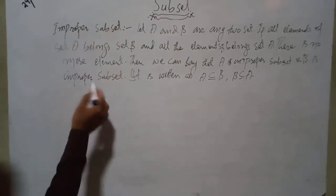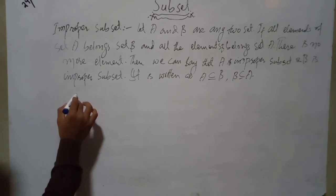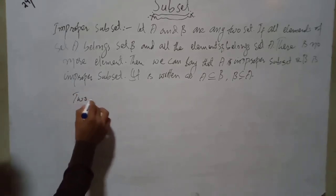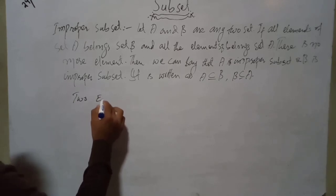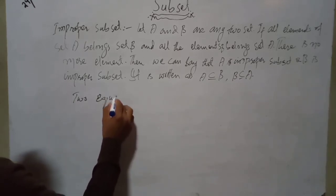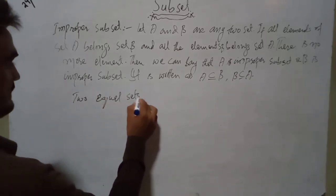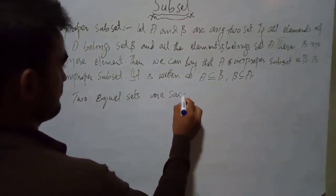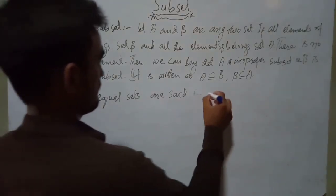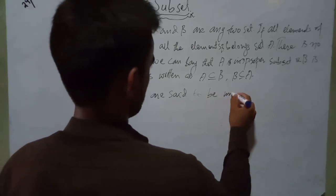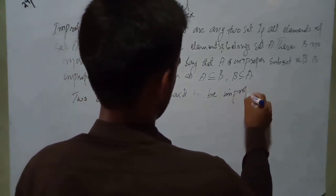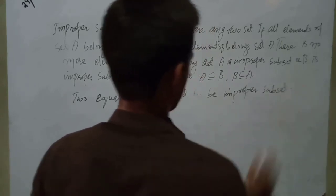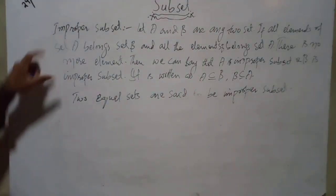It is clear from this definition that if A is a subset of B and B is also a subset of A, the two sets must be equal sets. So improper subsets are equal sets. In other words, two equal sets are said to be improper subsets of each other.